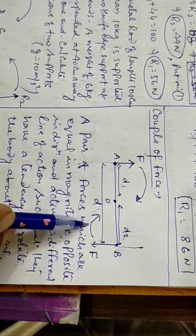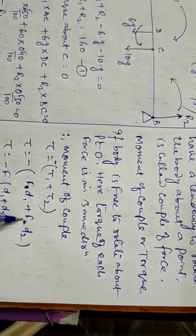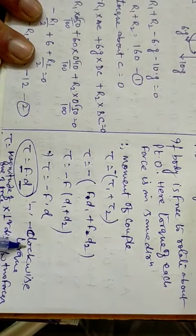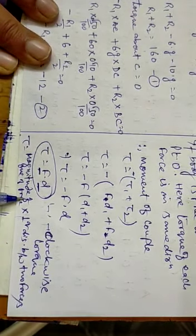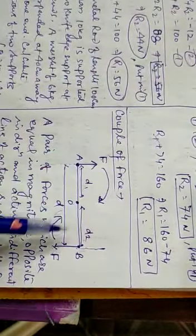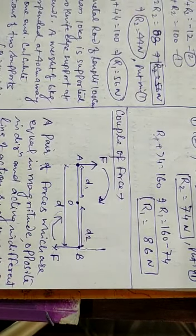For the torque of a couple about point O, both forces are clockwise so we add the moments: F × d1 plus F × d2 equals F × (d1 + d2), which equals F × D where D is the perpendicular distance between the two forces. Therefore, the torque of a couple equals the magnitude of one force multiplied by the perpendicular distance between the two forces.